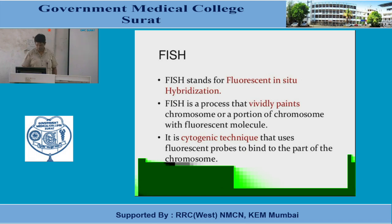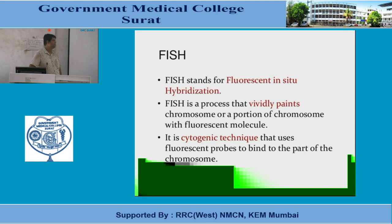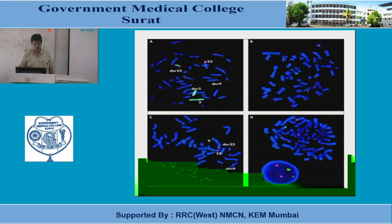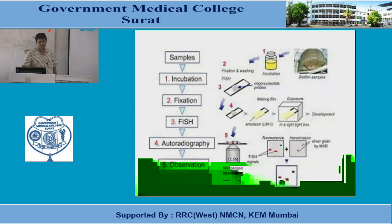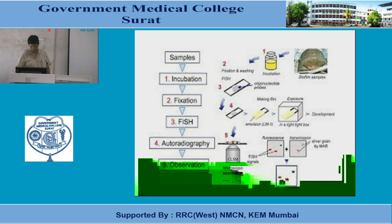FISH — fluorescent in-situ hybridization — vividly paints chromosomes or portions of chromosomes with fluorescent molecules. In the regular FISH process, when the patient's sample arrives, cells are isolated and arrested in metaphase using colchicine. In metaphase, vividly painted chromosome probes are used to identify specific chromosomes. Steps include incubation, fixation — where methanol is used — then FISH autoradiography, and finally observation.